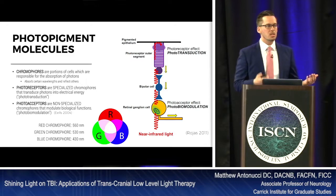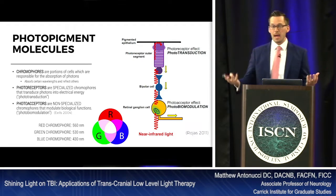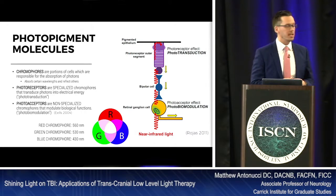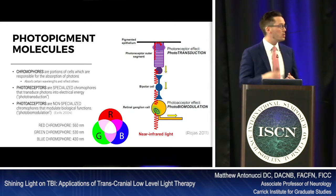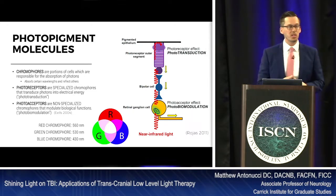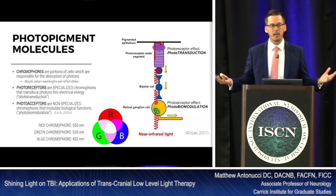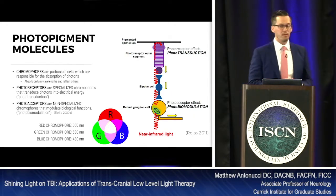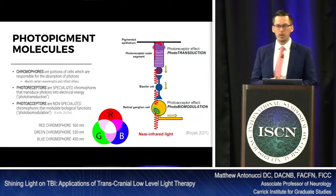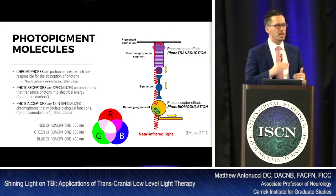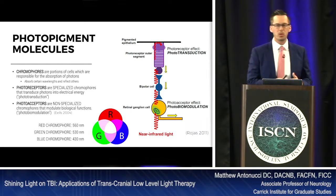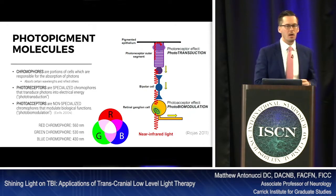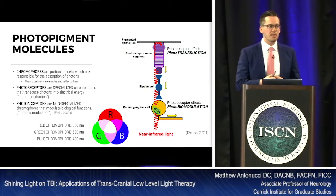These chromophores either absorb or reflect different wavelengths of light. The red chromophore in our cones accepts light at 560 nanometers and reflects everything else so that we can see red when those chromophores are stimulated. Green is 530, blue is 430. The number decreases as we go towards the blue or ultraviolet end of the spectrum, and increases as we go towards the infrared or microwave end.